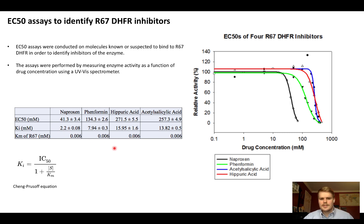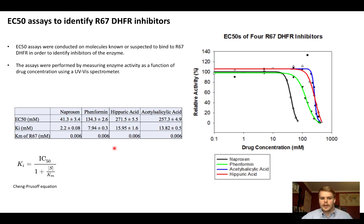The main reason we did these assays was to confirm that we had inhibitors. Now that we know these drugs bind and inhibit R67, we're hoping that our NMR assays would show their binding as well.